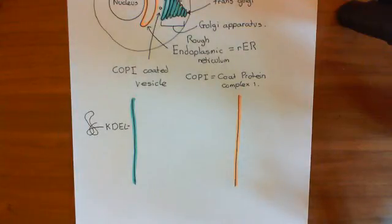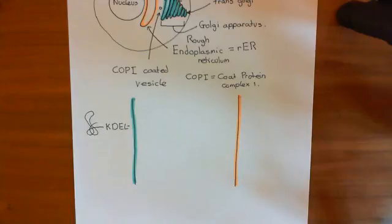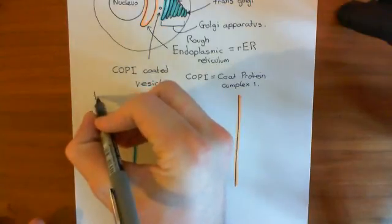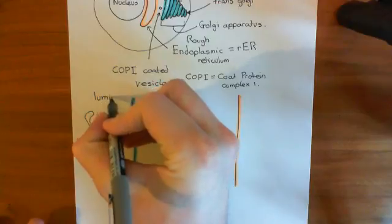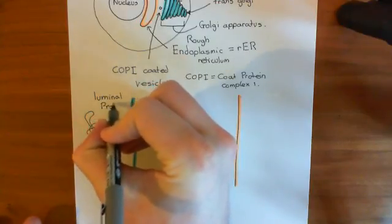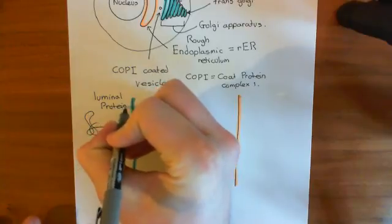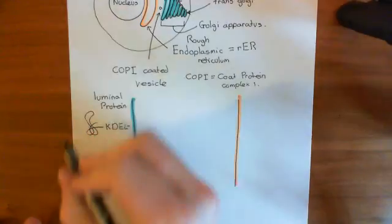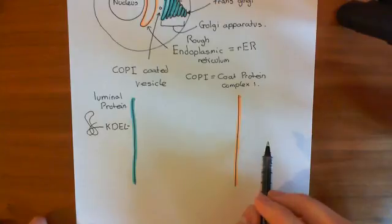Welcome back to this next video in which we're talking about Golgi to ER, or retrograde transport, which is the movement of proteins from the Golgi membrane or the Golgi lumen to the ER membrane or the ER lumen. We're starting with luminal proteins — here is a luminal protein, and we're going to see how we can move this luminal protein from the lumen of the cis-Golgi to the lumen of the endoplasmic reticulum.